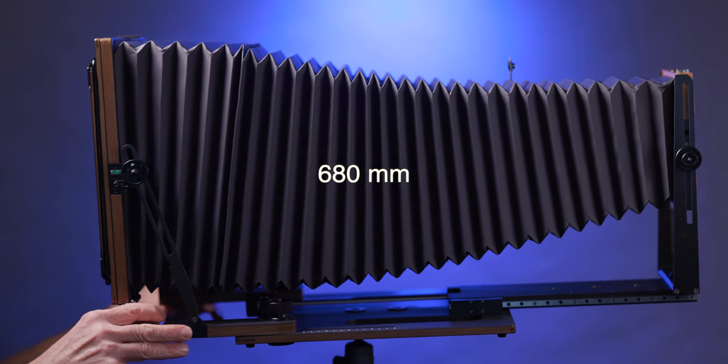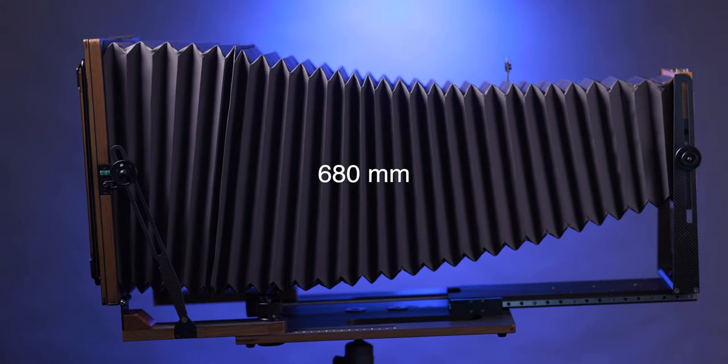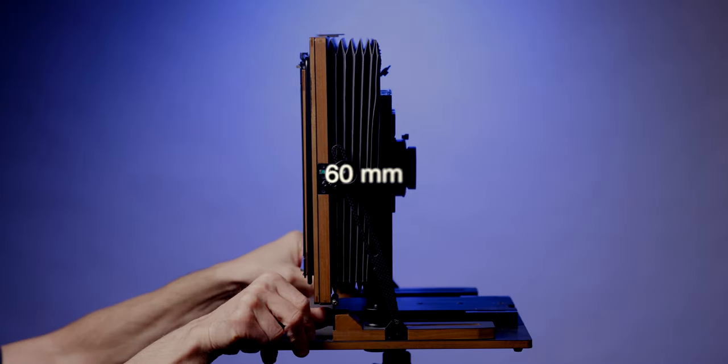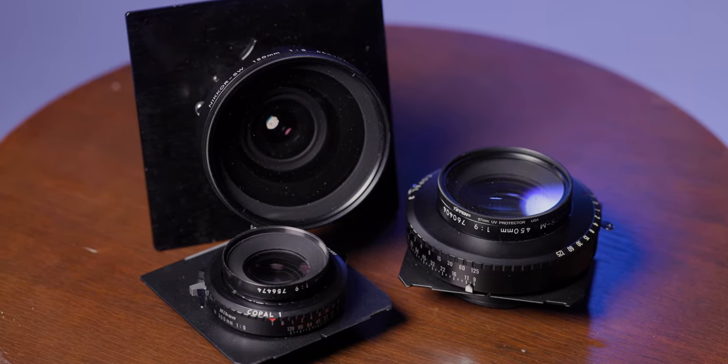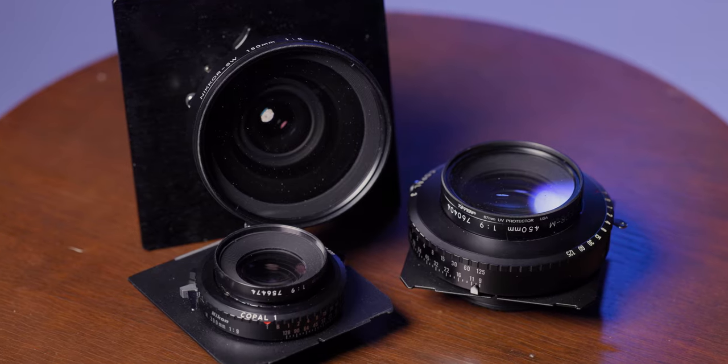The maximum amount that the bellows can extend within the limitations of this camera is about 26 inches and the minimum is about 2.4 inches. That's a very generous range and easily accommodates all of my lenses with plenty of movements.